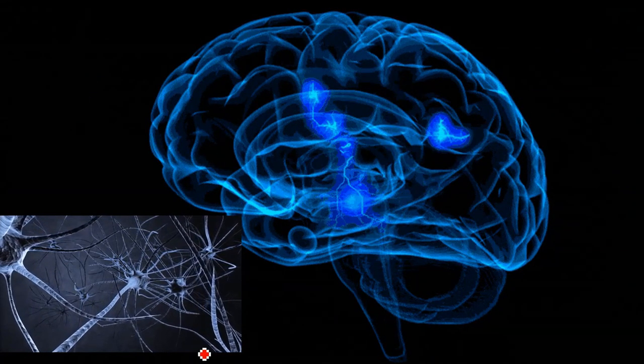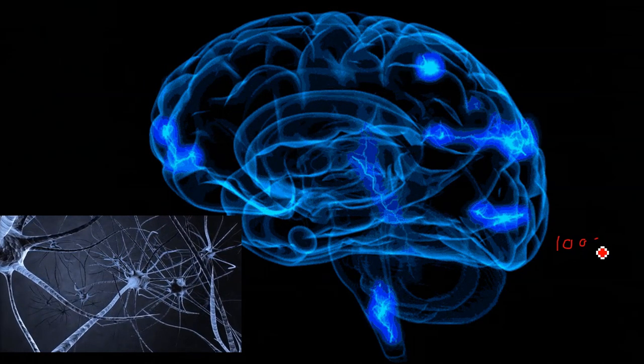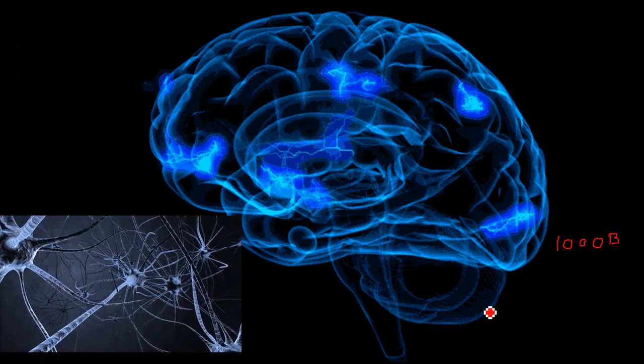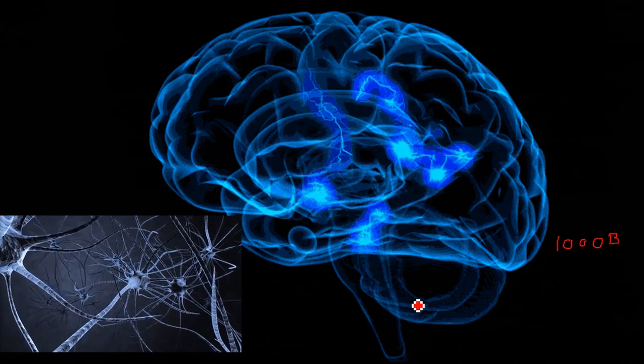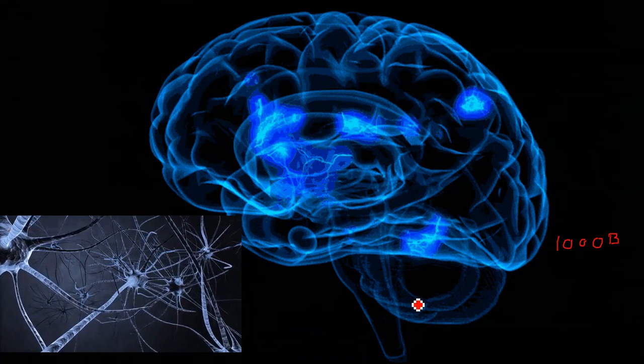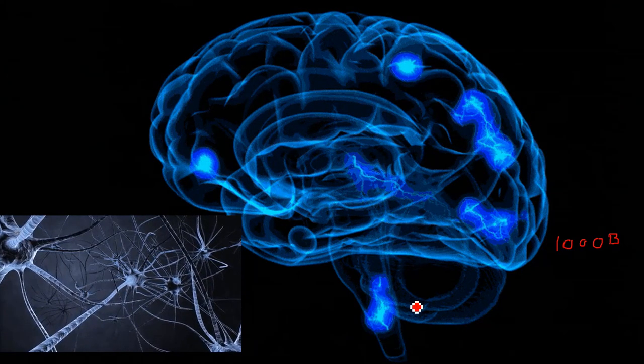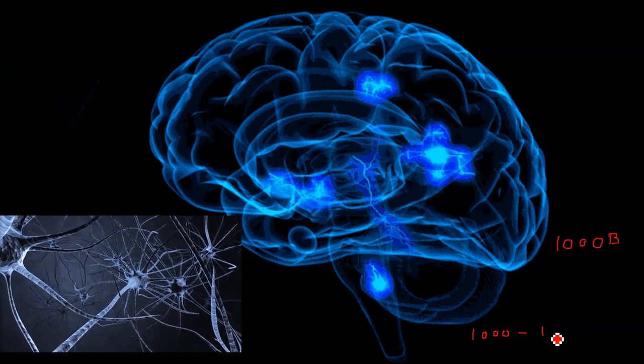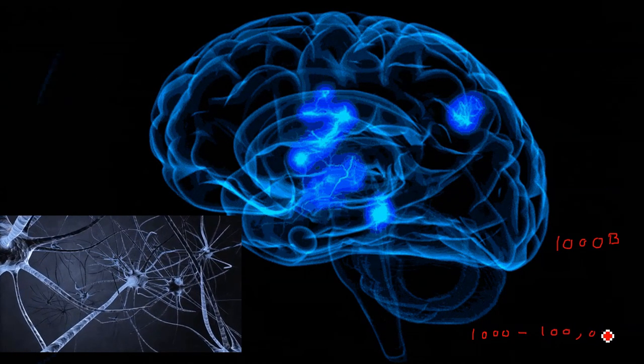There are around 1,000 billion neurons in the human brain. Similarly, each neuron has an association point somewhere in the range of 1,000 to 100,000.